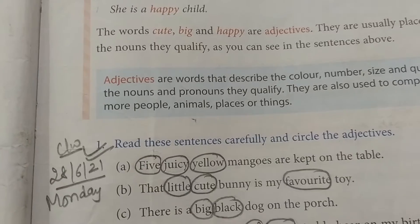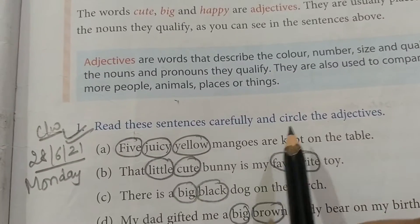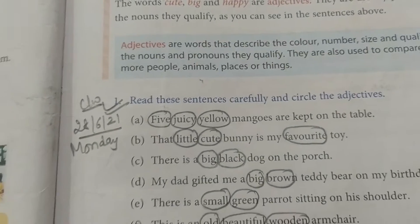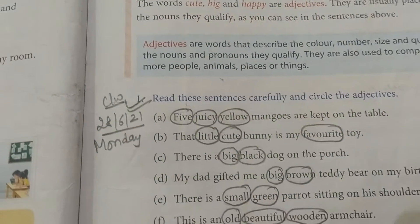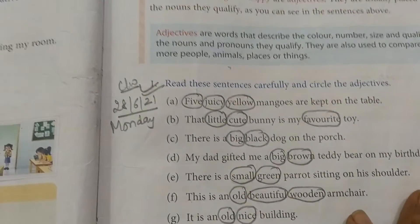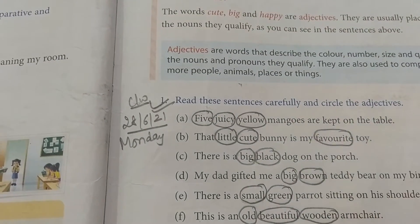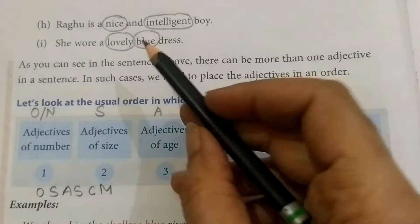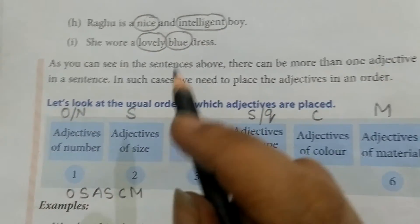So what was question number one? You had to circle the adjectives in the sentence. I think everyone understood what they had to do in question number one. There were more than one adjective in each question and you had to just circle them.